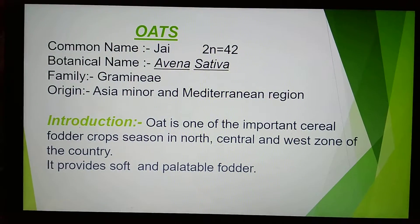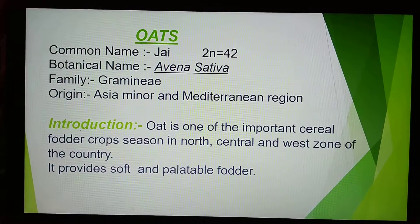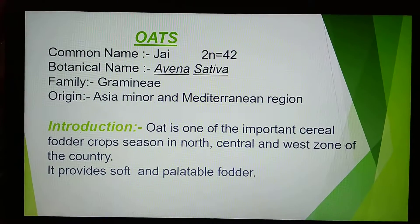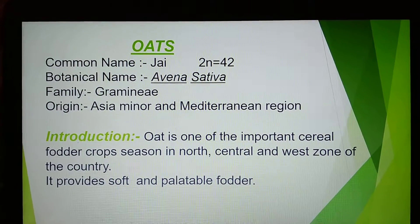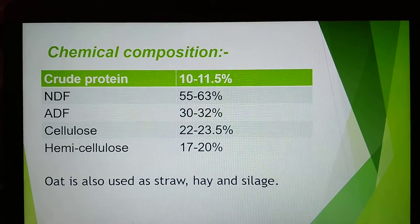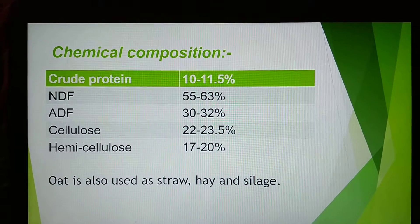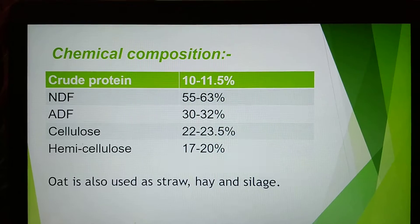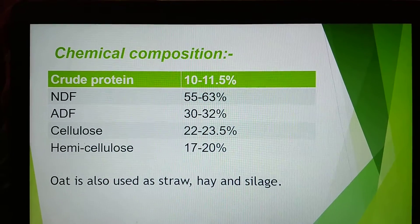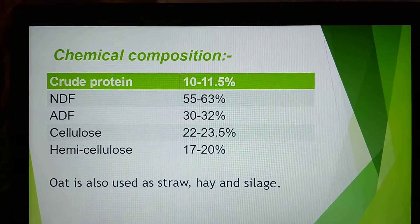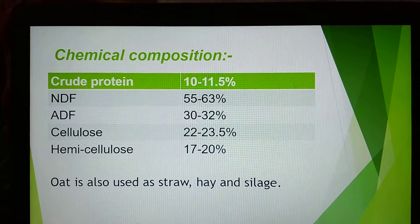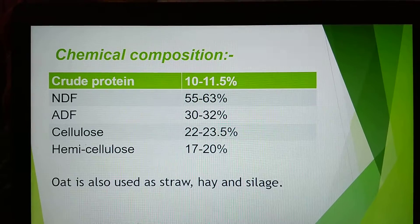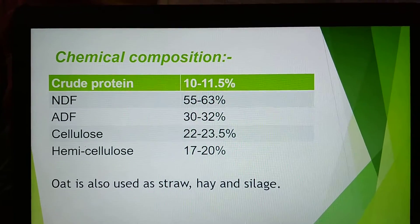Oat is one of the most important cereal fodder crops grown in the North, Central and Western zones of the country. It provides soft and palatable fodder. Chemical composition: crude protein 10–11.5%, NDF 55–63%, ADF 30–32%, cellulose 22–23.5%, hemicellulose 70–20%. Oat is also used in straw and silage.